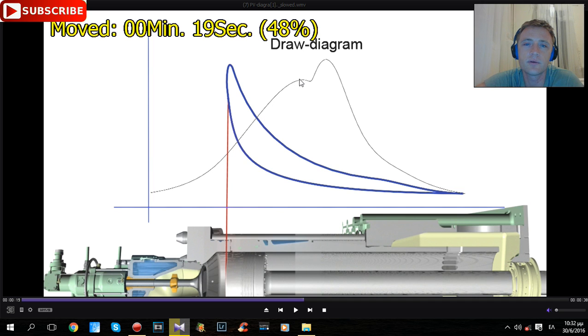Coming here, this is the ignition point, and after that, this is the expansion. Here, this is the zero point of scavenging where there is no pressure.